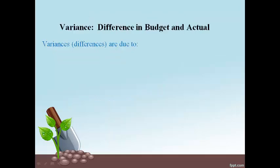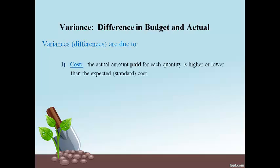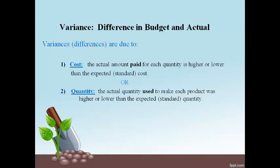The word variance means a difference between the budget amount and the actual amount. The budget amount is also referred to as the estimated amount or the standard amount. The difference in budget and actual cost is caused by one of two things: the cost or the amount paid for each quantity was different than expected, or the quantity used was different than expected.